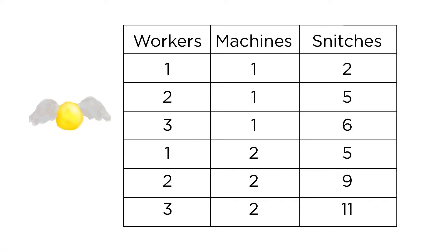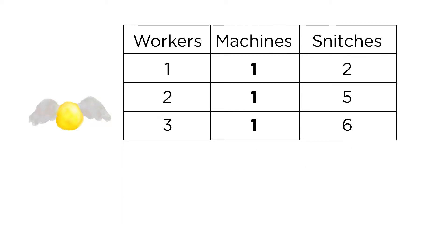Remember the table we saw last time, showing the number of golden snitches that could be produced given a certain number of workers and machines. Suppose there's a last-minute Quidditch tournament and we need more snitches. We only have one machine and there's no time to buy another one, but we can hire more workers to help run this one machine. With one worker and one machine, we can produce two snitches. Add a second worker and we can now produce five snitches. Add a third worker and now we produce six.